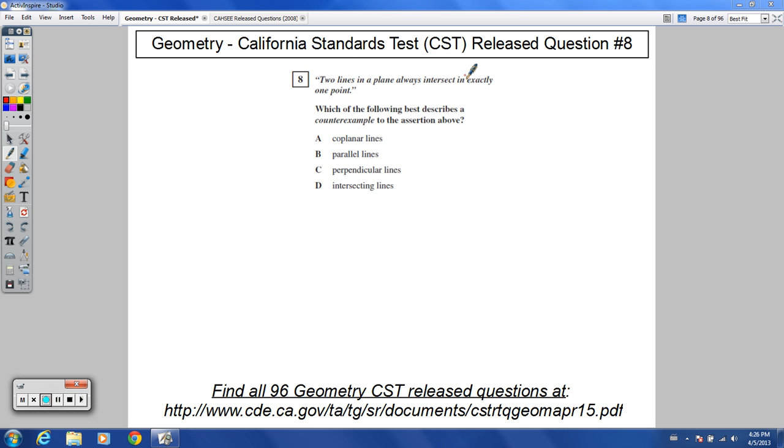And it says this, two lines in a plane always intersect in exactly one point. Which of the following best describes a counterexample to the assertion above?